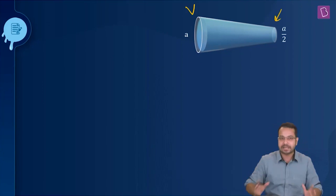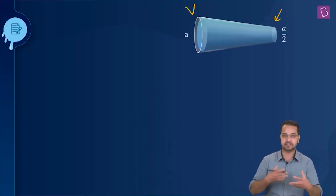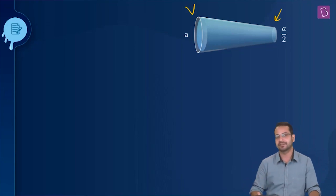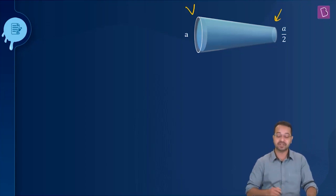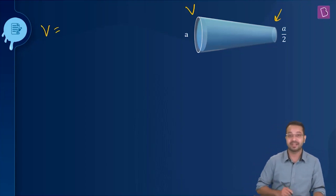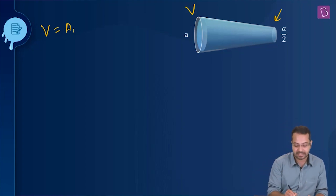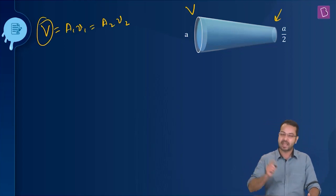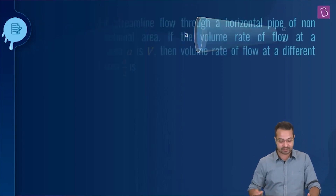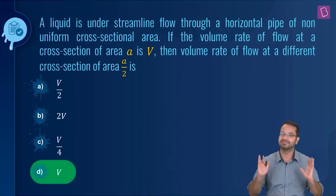Many times the first reaction is A₁V₁ = A₂V₂, but the V's here are different — we are not talking about the velocity at the ends, we are talking about the volumetric flow rate. The equation of continuity tells us that the volumetric flow rate is constant at any point, so A₁V₁ = A₂V₂ equals the volumetric flow rate. Hence the correct option is option D: just V.